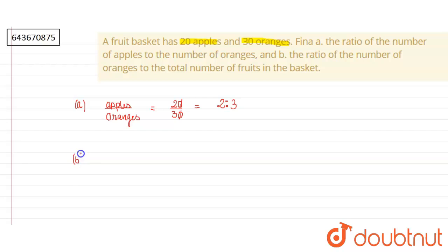Our second part is the ratio of the number of oranges to the total number of fruit. So number of oranges to the total number of fruits, which would be equal to apples plus oranges.